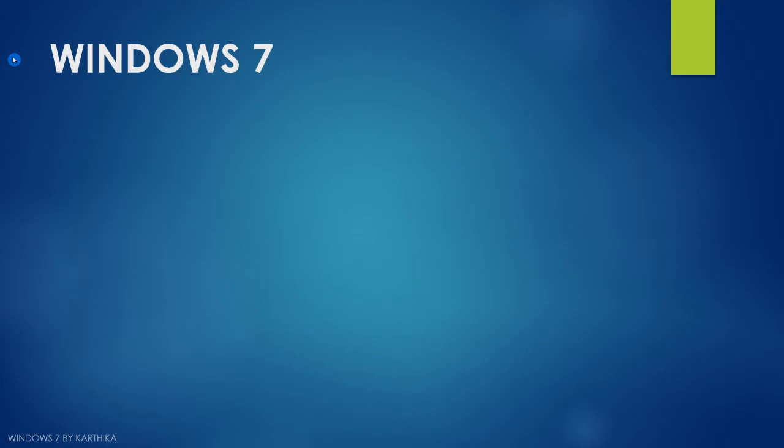In our third standard we learned about the types of software — application software and system software. System software is the software which is used to make your computer system work. Windows is that kind of system software which is called an operating system.